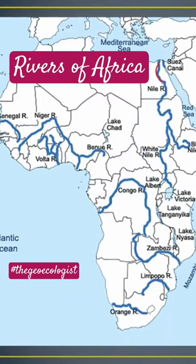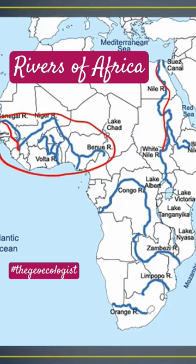If you observe the Nile River and its adjoining, we learned in the previous lecture. The major river in the West African segment is the River Senegal and River Niger. We also have River Volta and Benue, and Lake Chad.